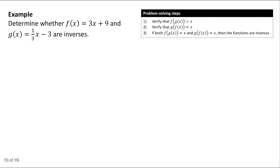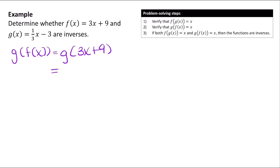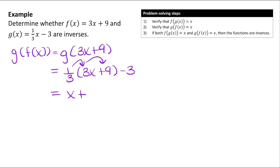Now let's verify the second part of this definition: that g of f of x equals x. So g of f of x is going to be g of 3x plus 9. I'm going to take 3x plus 9 and plug it into the function g. So I have one-third times 3x plus 9, minus 3. Distributing the one-third: one-third times 3x gives me x, plus one-third times 9, which is 3, and then minus 3. So plus 3 and minus 3 make 0, leaving us with x.